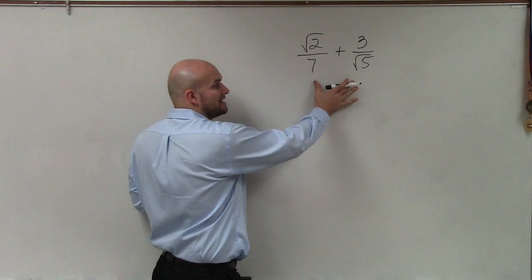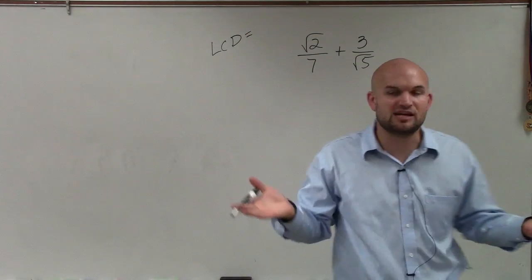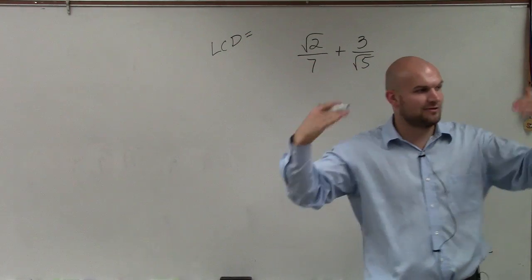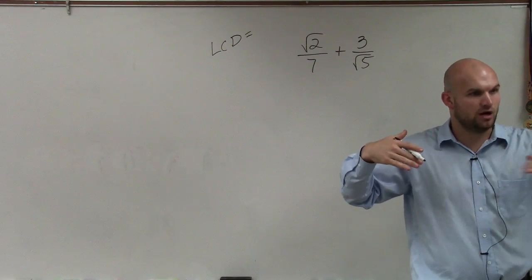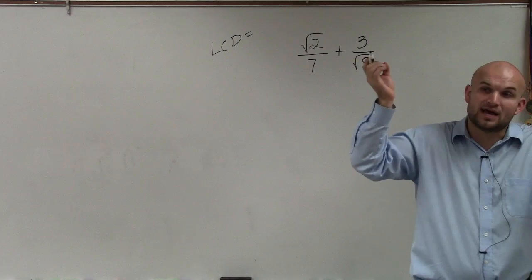To do that, we need to determine the LCD. Now, when we're looking at factors like 3 and 4, we can easily list 3, 6, 9, 12, 15, and then 4, 8, 12, and say the LCD is 12.